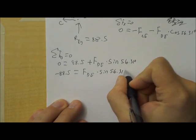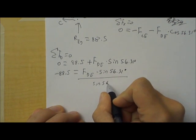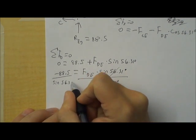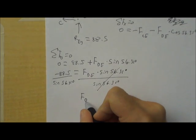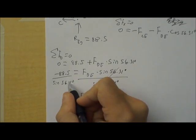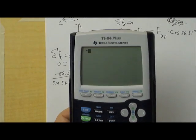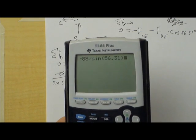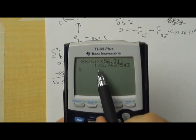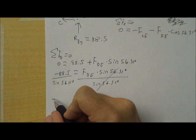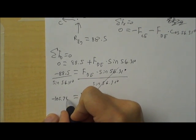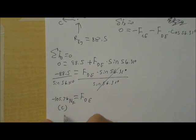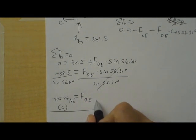And then, we need to divide by the sine of 56.31 degrees. So, I have FDE equals, and then I just need to type that into my calculator. Negative 88.5 divided by sine 56.31, close parentheses. And we get negative 105.76. And that is Newton of force. And that's compression. So, I'm going to automatically put the parentheses C.